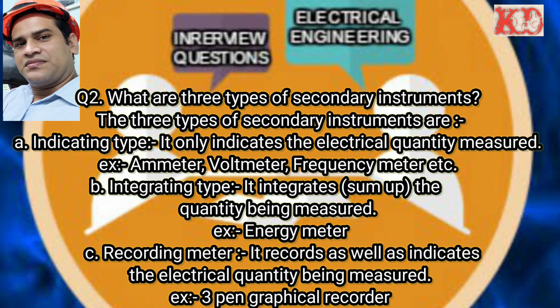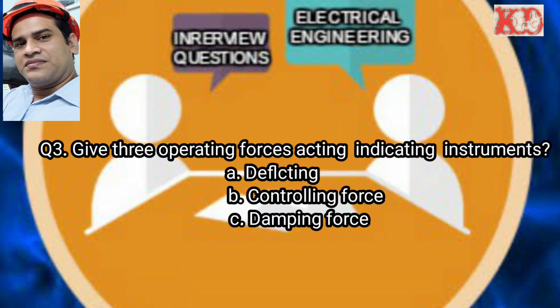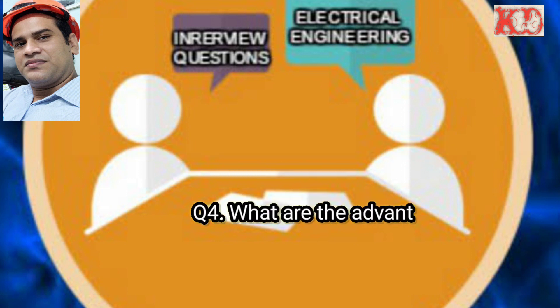Third, recording type — it records as well as indicates the electrical quantity being measured, example a 35-pin graphical recorder. Question number three: Give three operating forces acting on indicating instruments. Answer: first, deflecting force; second, controlling force; and third, damping force.